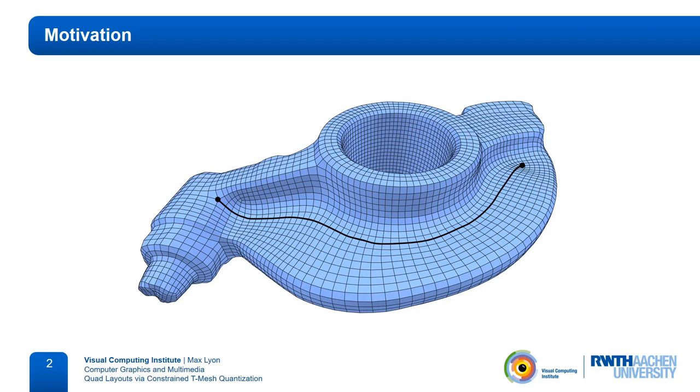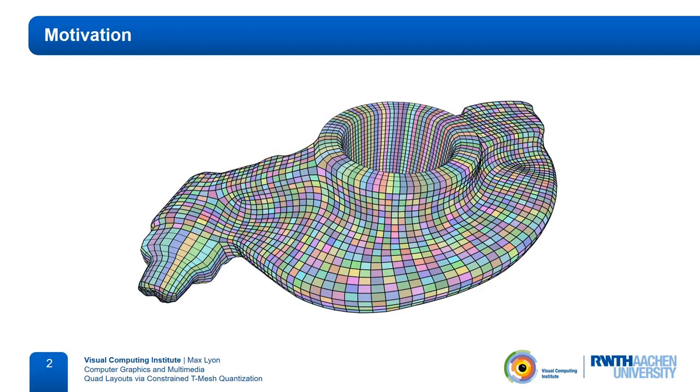Unfortunately, if the quad mesh generation algorithm does not explicitly try to form such good connections, separatrices may often barely miss other singularities and will then run a long distance, spiraling around the mesh before finally hitting another singularity. The base complex, which is formed by all separatrices, will then be very dense.